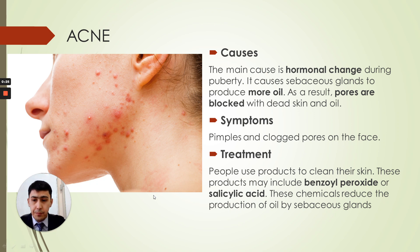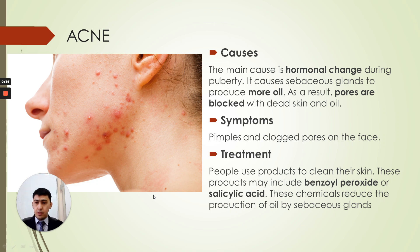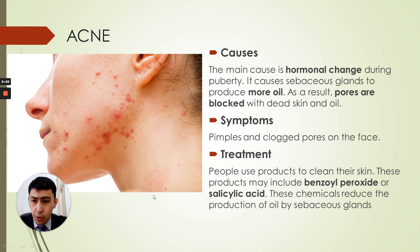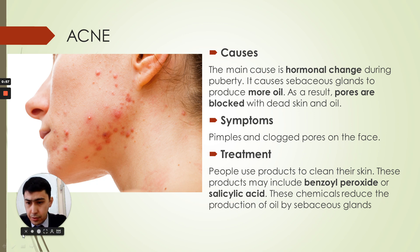The first one is acne. Acne is caused by hormonal changes during puberty — the process when a child's organism matures and becomes an adult organism. We have sebaceous glands, which produce oil, but in the case of acne they produce a lot more oil than usual, and as a result it may become blocked in dead skin.